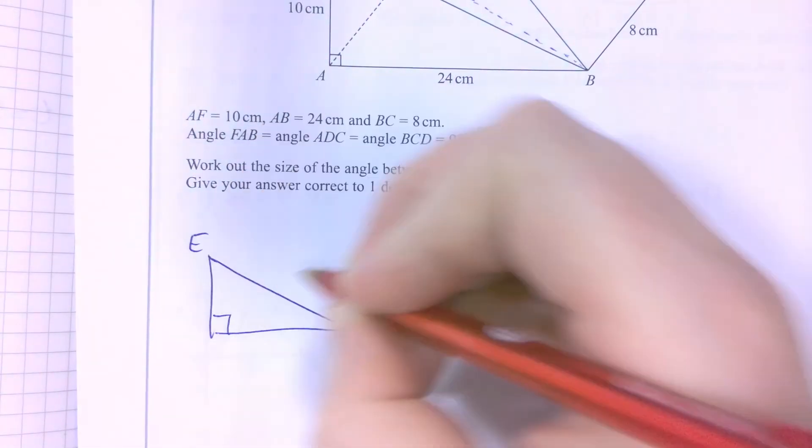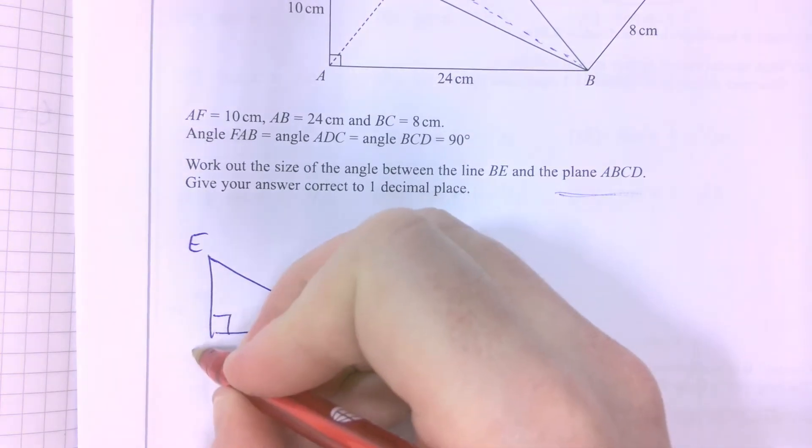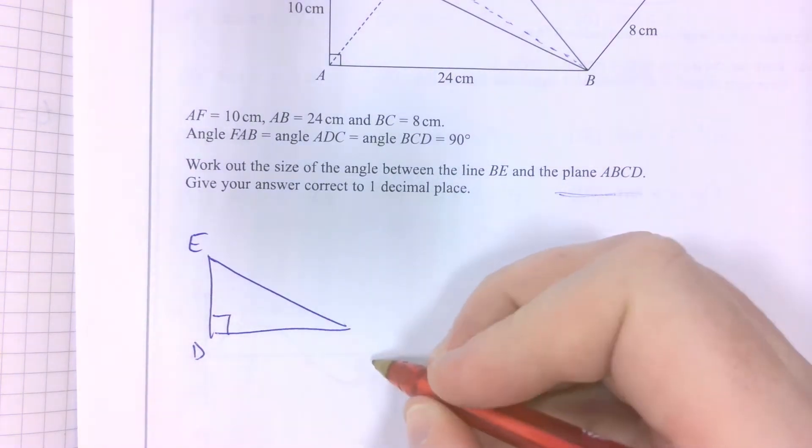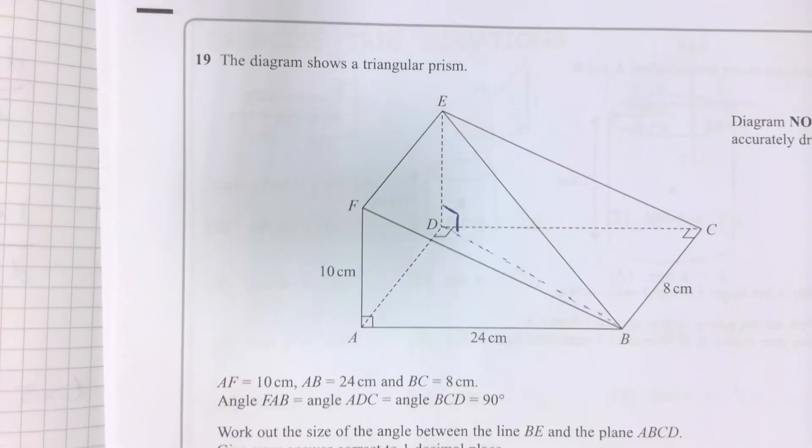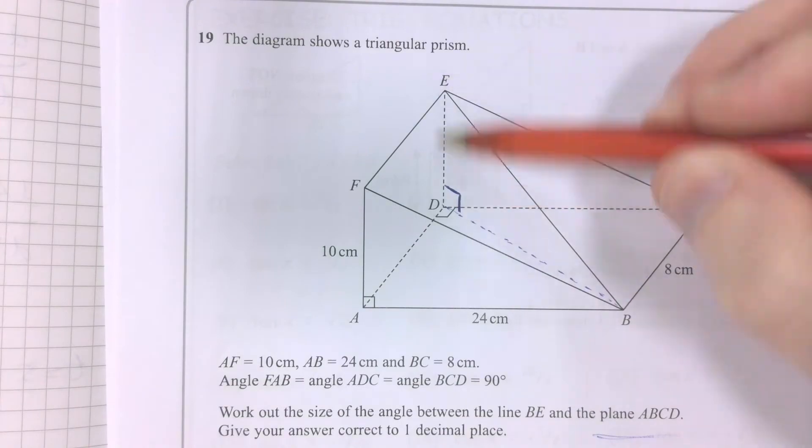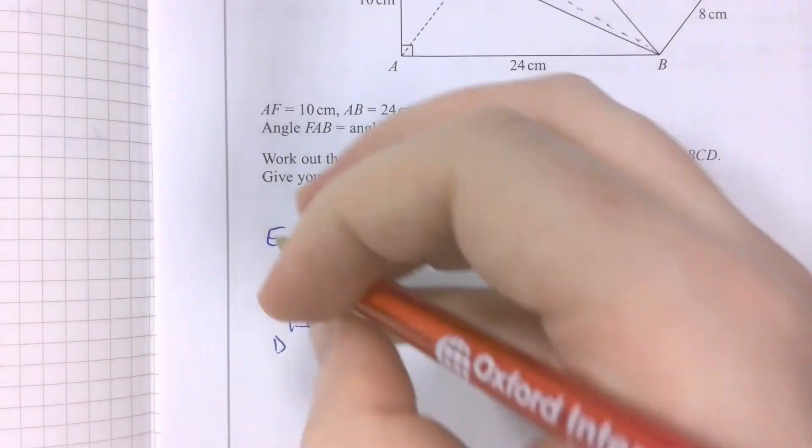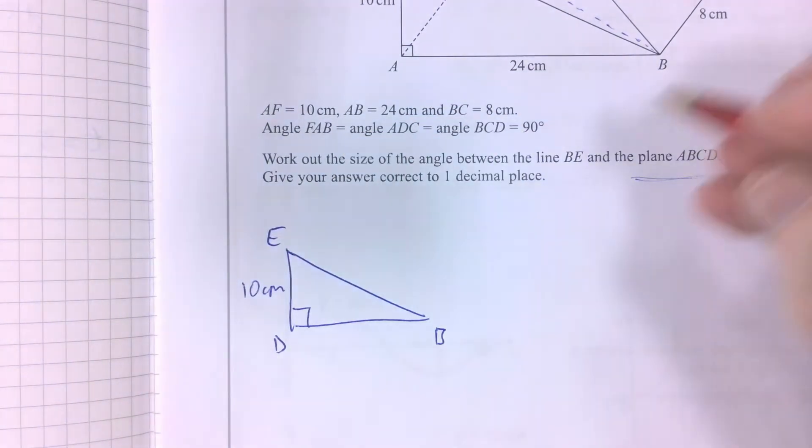So this is the equivalent of point E in the diagram above. Here's point D, and here's point B. Now, we can extrapolate that this length ED is 10 centimetres, because it's the same as the height of the diagram.